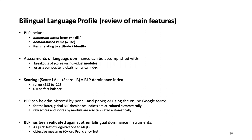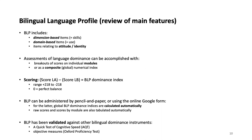To summarize, the BLP includes dimension-based items related to skills, domain-based items relating to use, and items that relate to attitude and identity. You can break out dominance assessments by modules or use them globally as a composite index. The scoring takes the score for language A, subtracts language B, and you get the global index ranging from plus 218 to minus 218, where zero is perfect balance. The BLP can be administered with pencil and paper or online via Google Forms, which calculates scores automatically. The BLP has been validated against other bilingual dominance instruments.